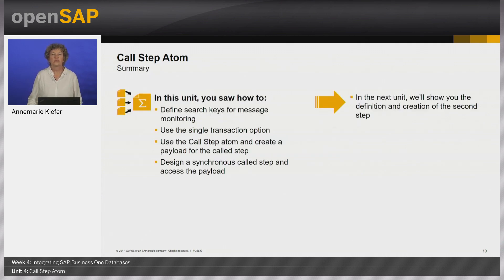So in this unit you saw how to define search keys for the message monitoring, use the single transaction option, use the call step atom and create a payload for the call step, design a synchronously called step, and access the payload. In the next unit we will show you the definition and creation of the second step. See you then.